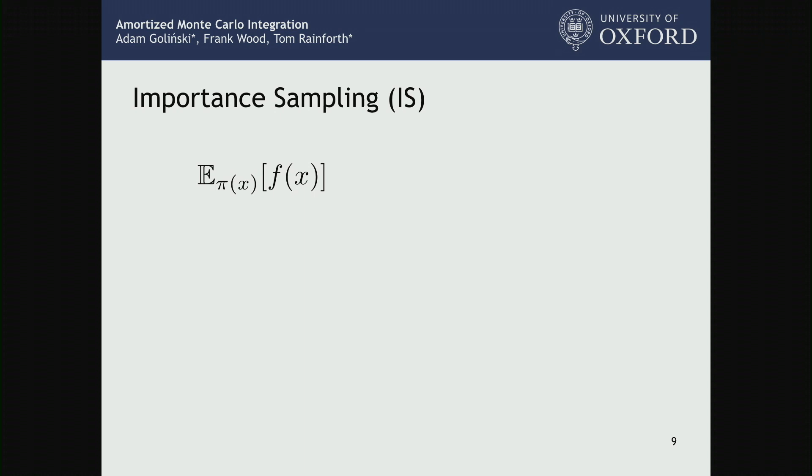Let's take a step back and start going through things more carefully. We're talking about expectations, and I'm going to start by talking about importance sampling — though a lot of what I say will still apply to MCMC methods and various other things. Imagine we have an expectation of some function f under a distribution pi of x, and for now we presume we do know pi exactly — we have the density, it's a proper probability distribution, and we can evaluate it. But we might not be able to draw samples from it.